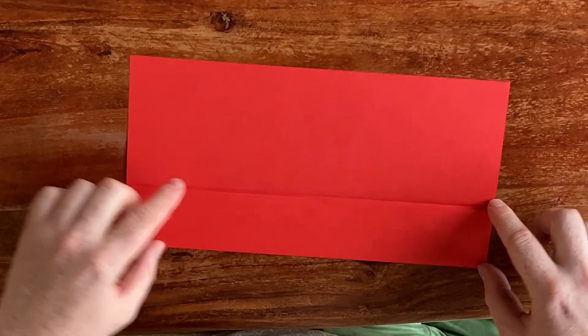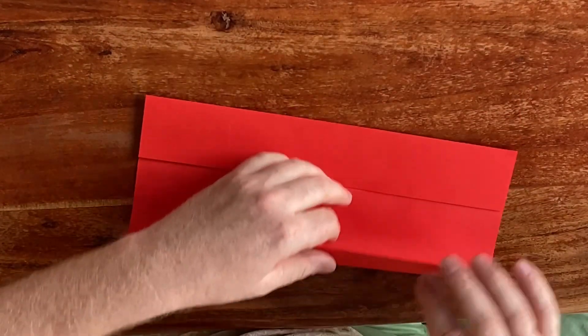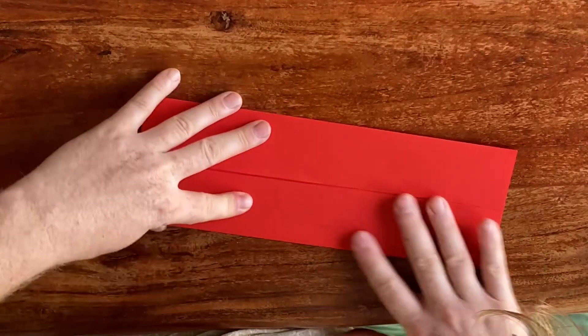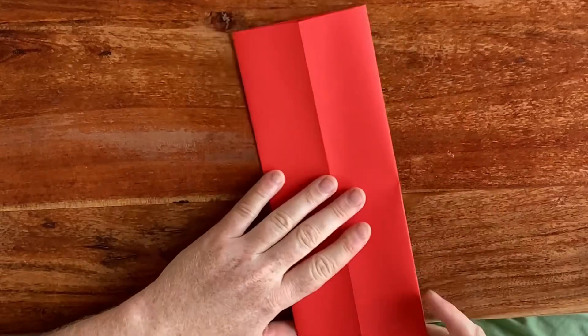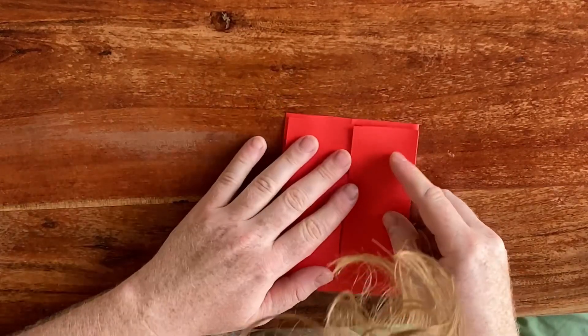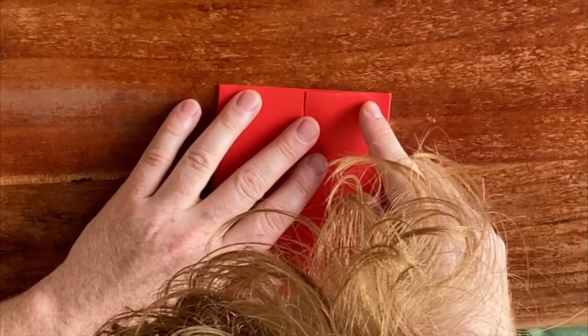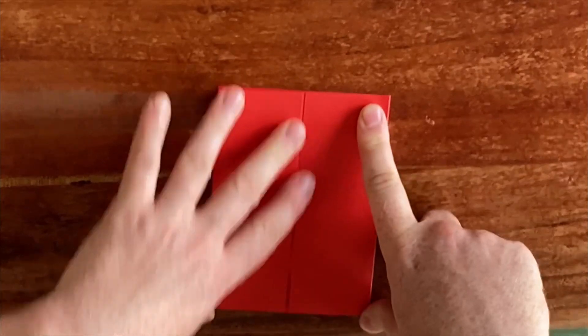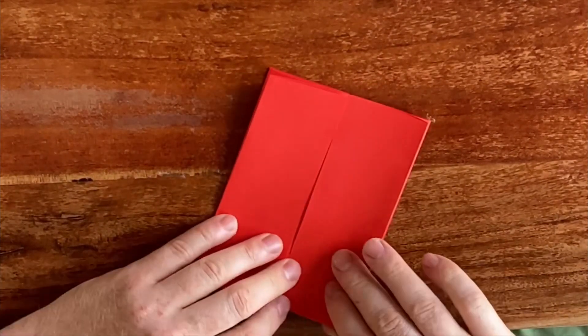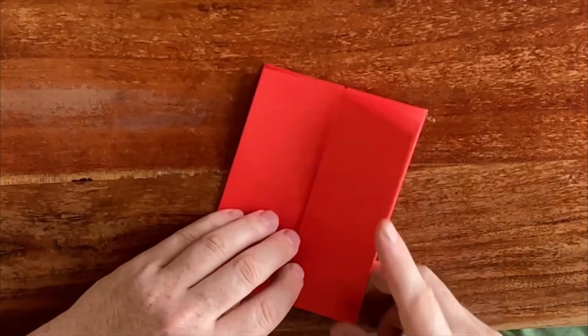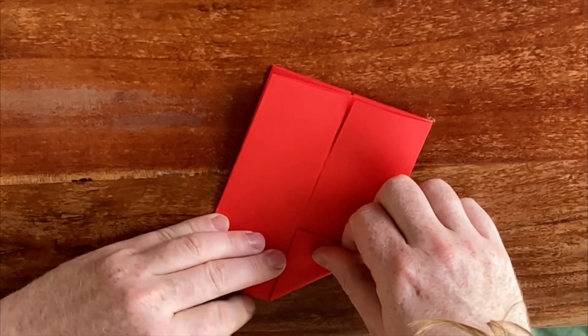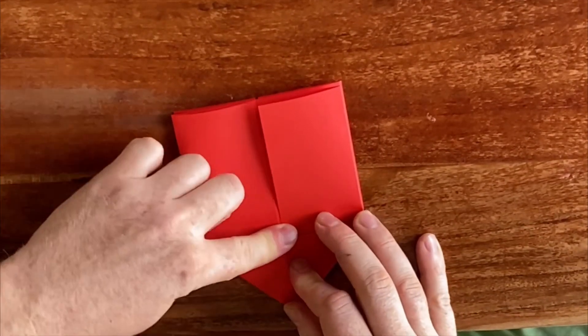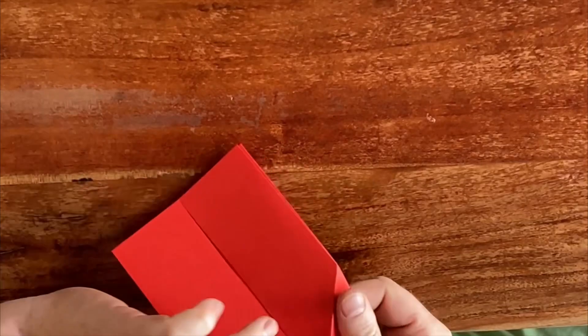Do try to have it uniform, have it as straight as possible, same on this side. We're going to take these corners here, so on the closed side not on the open side, and fold them towards the center. Then just flip over the paper and revert those folds.